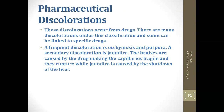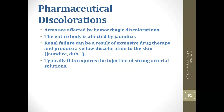Pharmaceutical discolorations occur as a result of drug use — not recreational, but prescription medication. The most frequent discolorations in this category are ecchymosis, purpura, and jaundice. Bruises are caused by drugs making capillaries fragile so they rupture; jaundice is caused by shutdown of the liver. Arms are primarily affected by hemorrhagic discolorations; the entire body can be affected by jaundice. Renal failure from extensive drug therapy can produce a yellow discoloration. Most of these cases require meeting a high formaldehyde demand with stronger solutions — counter-staining and restricted cervical injection.